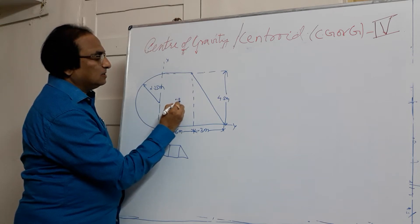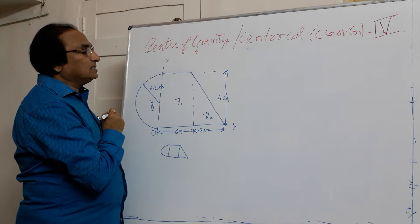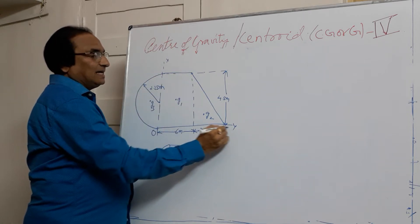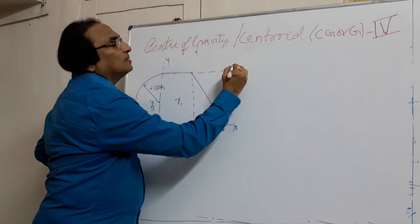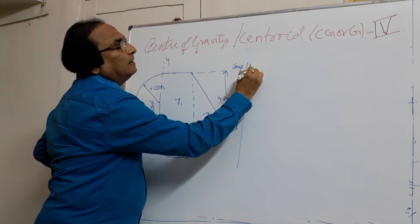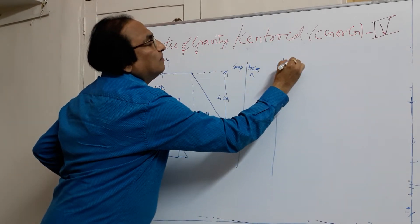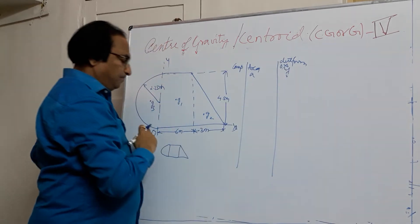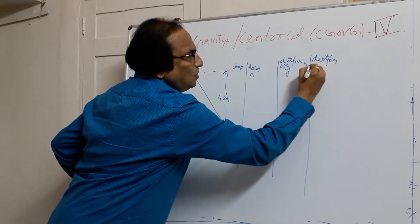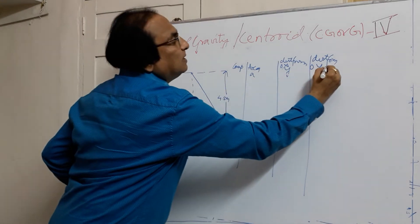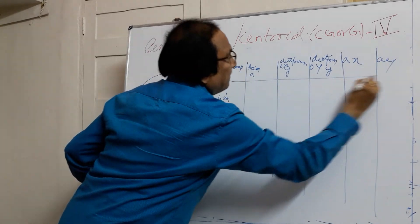We have a rectangle G1, a triangle G2, and a semicircle G3 added to get the required figure. Our reference axis is X and Y, which is given in the problem, and O is the origin. We can now go for the table with columns: component, area, distance of the centroid from OX (Y), distance from OY (X), and the moment columns AX and AY — six columns in total.